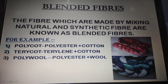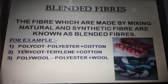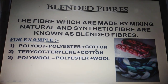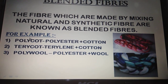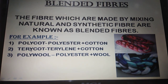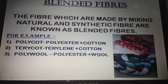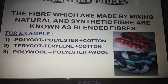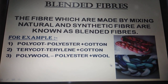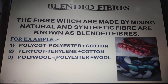For example, there is polycot — poly means a synthetic fiber, that is polyester, and cot means cotton. Then we have terricot — terry is a famous type of polyester called terrylene, plus cot means cotton. Then we have polywool — polyester and wool. All these come under the category of blended fiber.